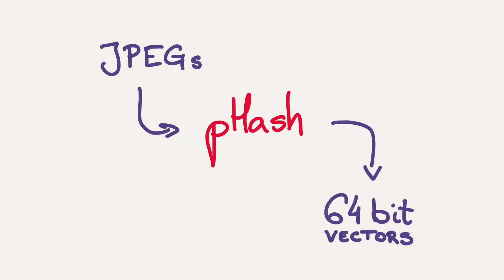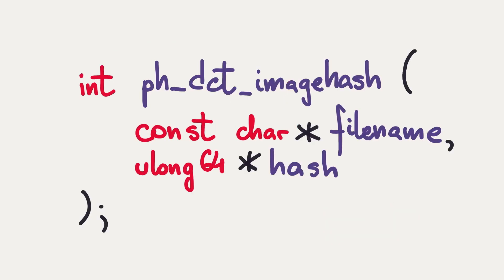One example of this family is called PHASH. You can just get it off the internet under some open-source license. I think it's GPL. You can then take image files, for example, JPEGs, and PHASH will translate them for you into those short 64-bit vectors. PHASH exposes a nice and friendly C API. Given a file name and a pointer to a piece of memory where I can store a hash, I will get zero if hashing was successful.